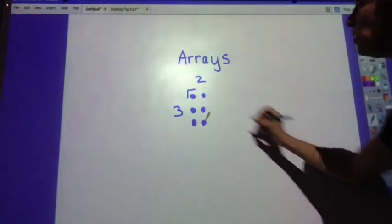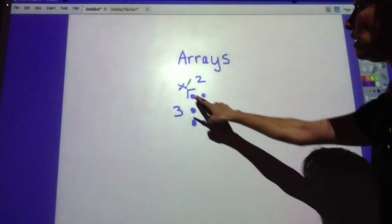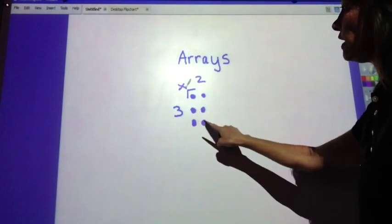And I could still show that this is 3 times 2 equals 1, 2, 3, 4, 5, 6.